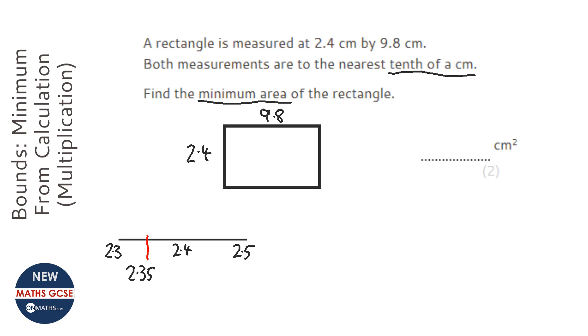And I'm going to do the same again for 9.8, so we're going to put 9.8 in the middle, next one down would have been 9.7, next one up would have been 9.9, and I'm going to find that halfway point, which is 9.75.